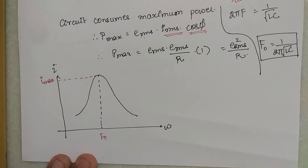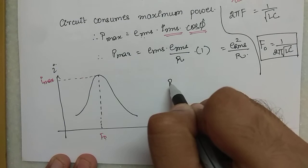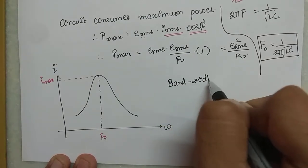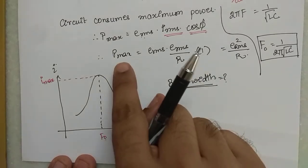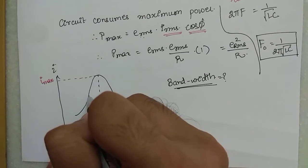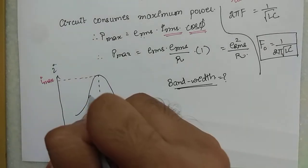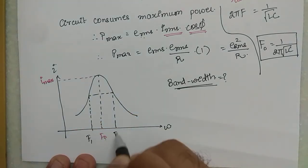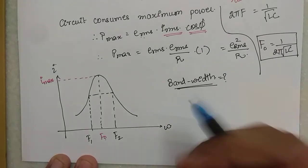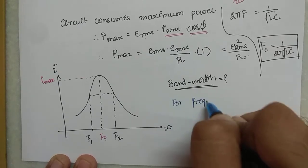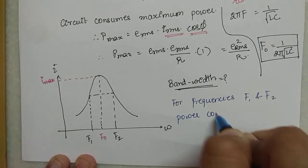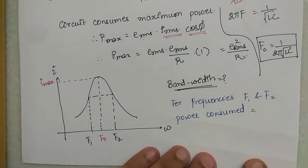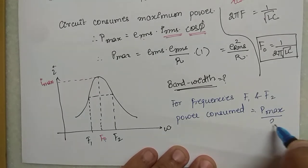There is something called bandwidth. We choose two frequencies f1 and f2 where the power consumed equals half the maximum value — P_max/2. These are the half-power frequencies. The bandwidth is the range, or difference, between these two frequencies.